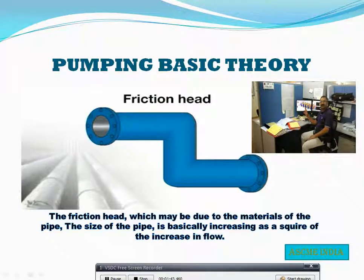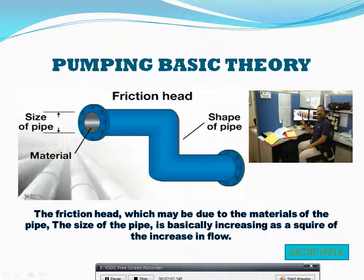Friction head: the friction head, which may be due to the material of the pipe and the size of the pipe, is basically increasing as a square of the increase in the flow.